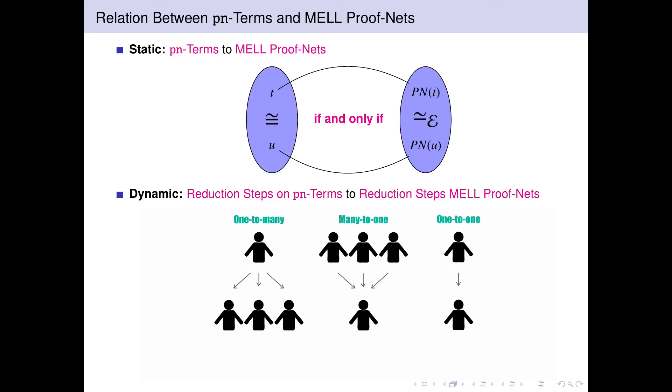so that the relation between the reduction steps on the terms and the ones on the proof nets are in one-to-one correspondence. In the sense that one single step on a term translates to a single step on a proof net and the translation is injective so that different steps on terms translate to different steps on proof nets.